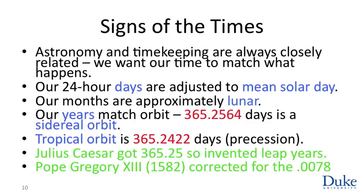The synodic lunar month is 29.5 days; our calendar months are a bit longer than that. This allows for the rare phenomenon of two full moons falling in the same month, which is colloquially called a blue moon. It requires a full moon right at the beginning of the month, but it does happen.